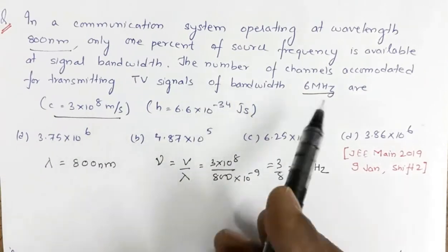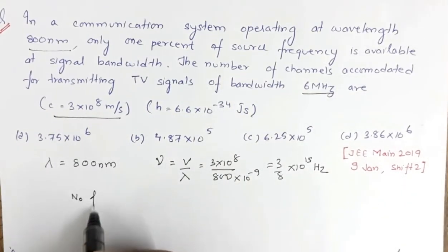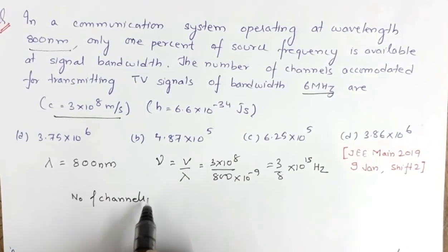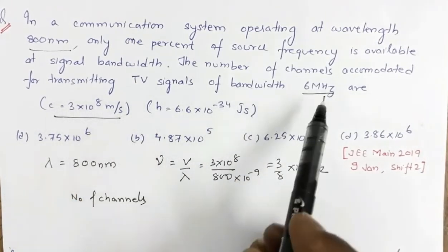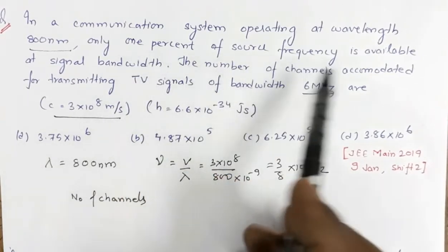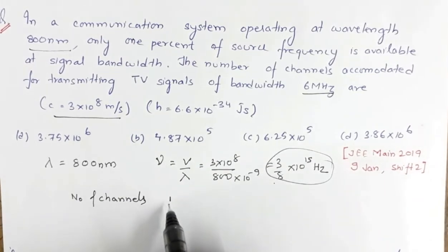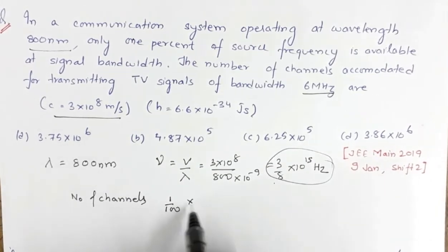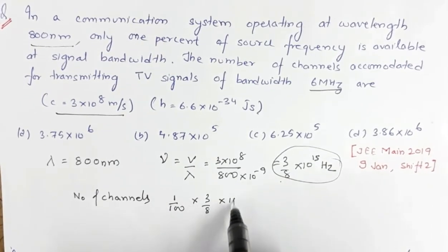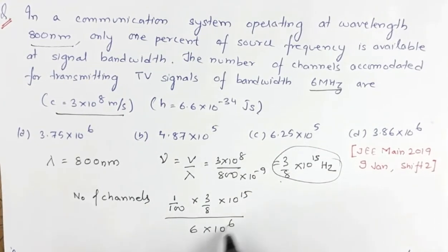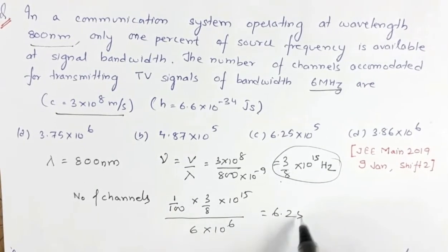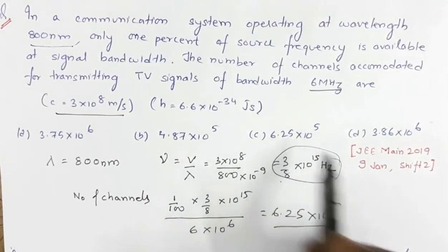Now we calculate the number of channels. Total bandwidth per channel is 6 MHz, but only one percent of the source frequency is available. So the available bandwidth is (1/100) × (3/8)×10¹⁵. Dividing by 6×10⁶, we get 6.25×10⁵. This is the total number of channels available, so option C is the correct answer.